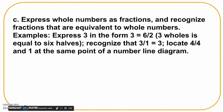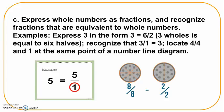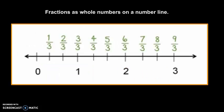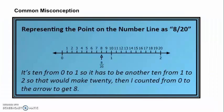The next component of 3NF3 continues to focus on equivalent fractions but emphasizes whole numbers as fractions. This number line model encourages students to determine the unit fractions in each whole. This number line is divided into thirds — each whole consists of 3 thirds. When using number lines that represent more than one whole, students often count all of the units on the entire number line instead of only counting the units in each whole.